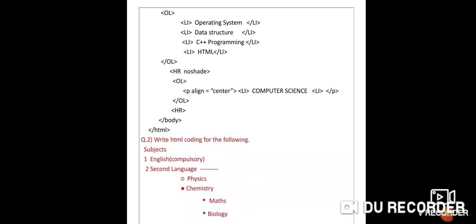Next question: create an HTML page showing Subjects, with English (compulsory) and Second Language as numbered items, and under second language show Physics with a hollow circle bullet, Chemistry with a solid circle bullet, and under chemistry show Maths and Biology with square bullets. This example uses two list tags: ordered list and unordered list.